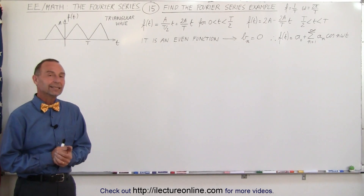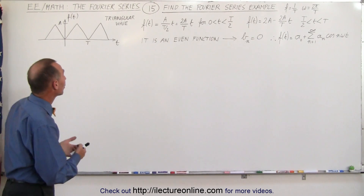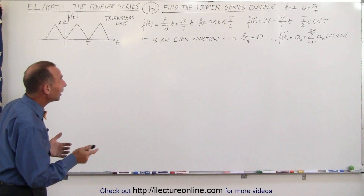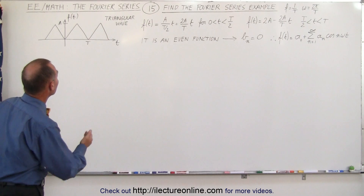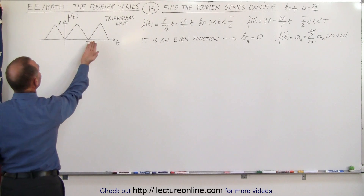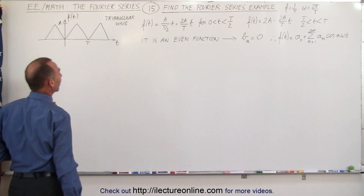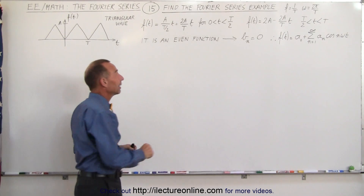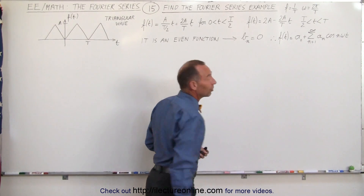Welcome to ElectronLine. Here we have a nice example. We have what we call a triangular wave periodic function, and we should realize that this is what we call an even function, which means that it has a mirror image about the vertical axis. We can simply flip this over and we have the exact same function. That means that the coefficients b_n are all equal to zero.